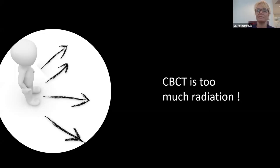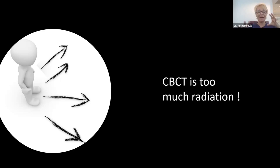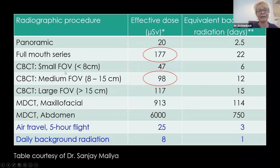You might say there's a lot of radiation with CBCTs. Well, if you have a short cone and don't have rectangular collimation, you are already exposing your patient to a lot of radiation just taking a regular FMX. A regular FMX is about the equivalent of four panoramics. An 8x8 medium field of view CBCT is roughly equivalent to five panoramics. According to a table from Dr. Malia, a full-mouth series is around 177 microsieverts of radiation, while a medium field of view 8x8 is approximately one panoramic equivalent.